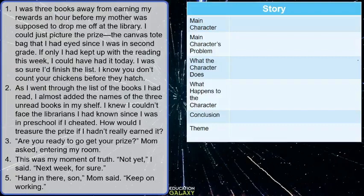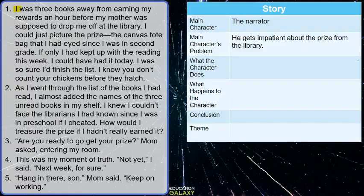Now we have a story and a beautiful story chart. Let's look at the first tab — it's main character. It is 'I,' who is the speaker or the narrator. What is the main character's problem? Right in the first paragraph it says, 'If only I had kept up with the reading this week, I could have had it today.' The main character is impatient about the prize from the library.